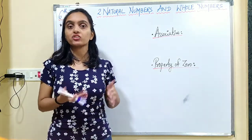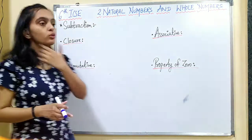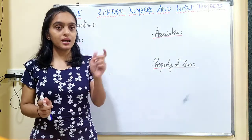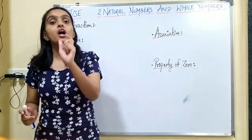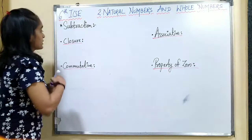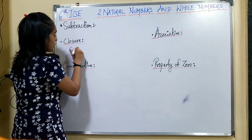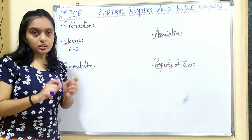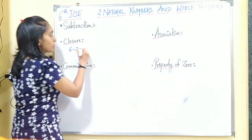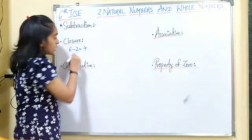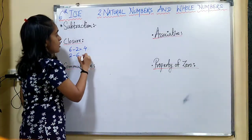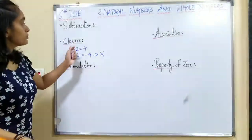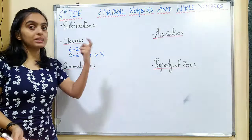Now we will study the properties of subtraction of whole numbers. The first property is closure property. Closure property means if we subtract any two whole numbers, the answer should again be a whole number. For example, if I have 6 minus 2, I get 4, which is a whole number. But if I subtract 6 from 2, I get minus 4, and minus 4 is not a whole number. So whole numbers are not closed under subtraction.